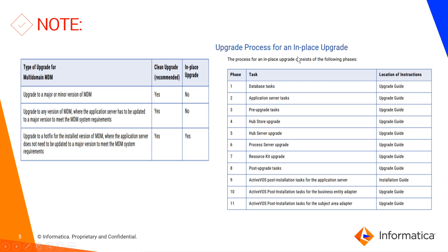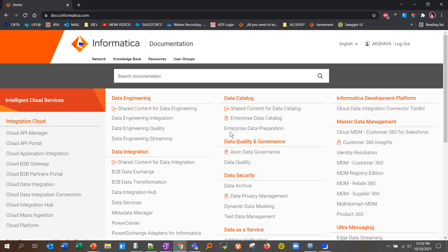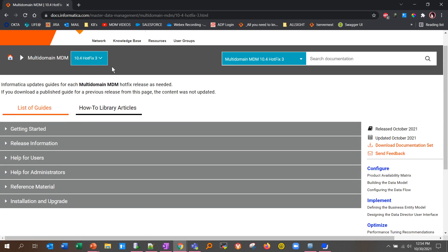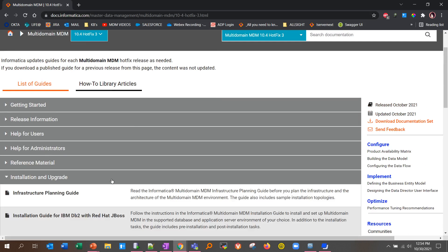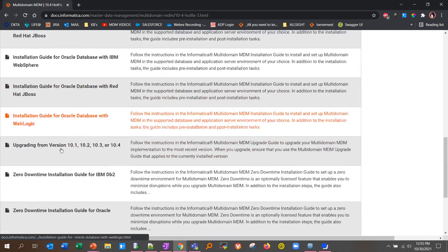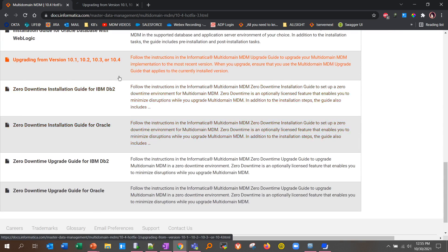For the upgrade process, you need to look at both the upgrade guide and the install guide. For a clean upgrade, most documentation is in the install guide; for an in-place upgrade, most documentation is in the upgrade guide. If you go to docs.informatica.com and navigate to MDM — for example, 10.4 hotfix 3 — you'll see many install guides and an upgrade guide. For in-place upgrade, primarily refer to the upgrade guide.